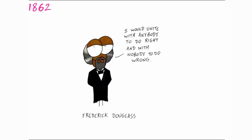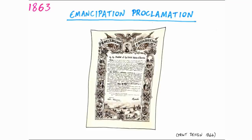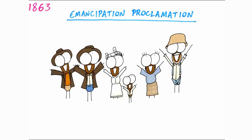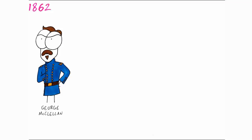Frederick Douglass, a former enslaved person and well-travelled social reformer, had been campaigning for the abolition of slavery — that that's what this war was truly about. In January 1863, Lincoln brought about the Emancipation Proclamation, an executive order that led to the freeing of three million slaves in the Confederate States. Many African Americans joined the Union army to fight against slavery.